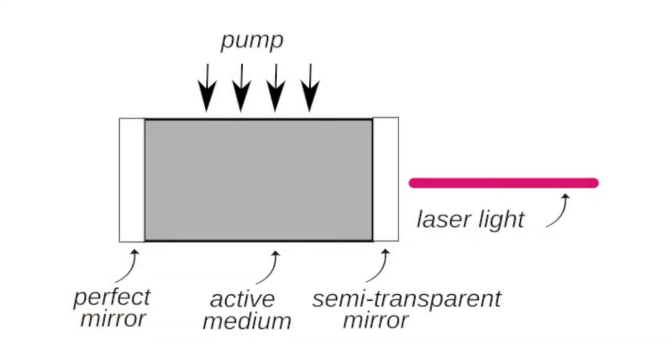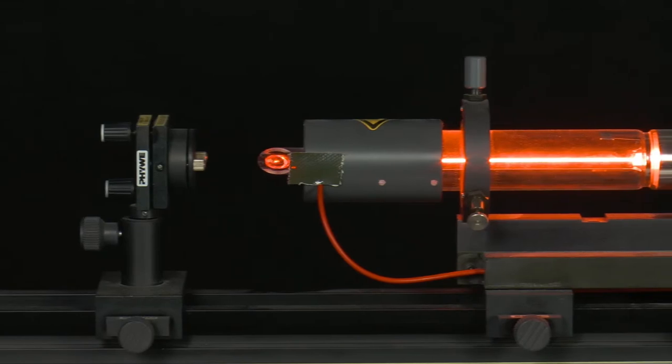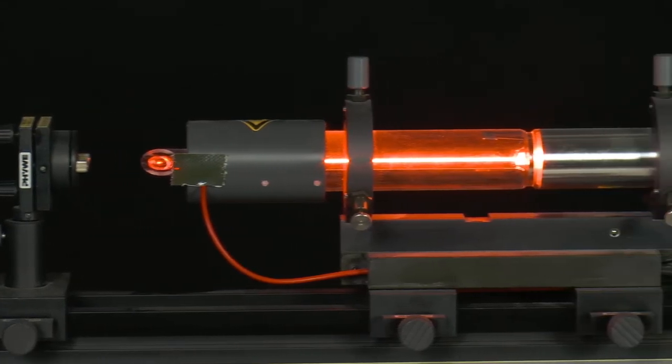An active medium, a resonator that is made of mirrors, and a pump source. If one conceives of a laser as an optical oscillator, the active medium serves as an amplifier, the resonator as feedback and the pump source as an energy supplier.